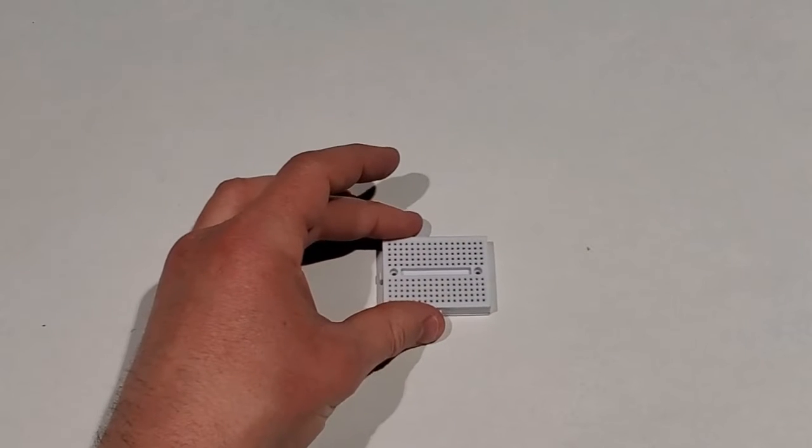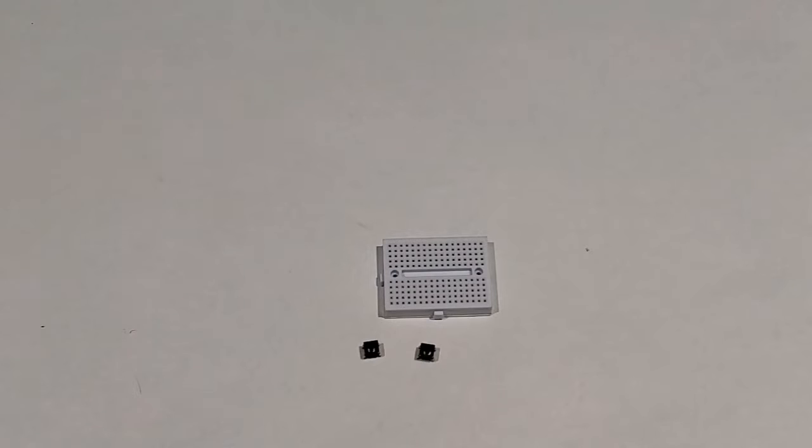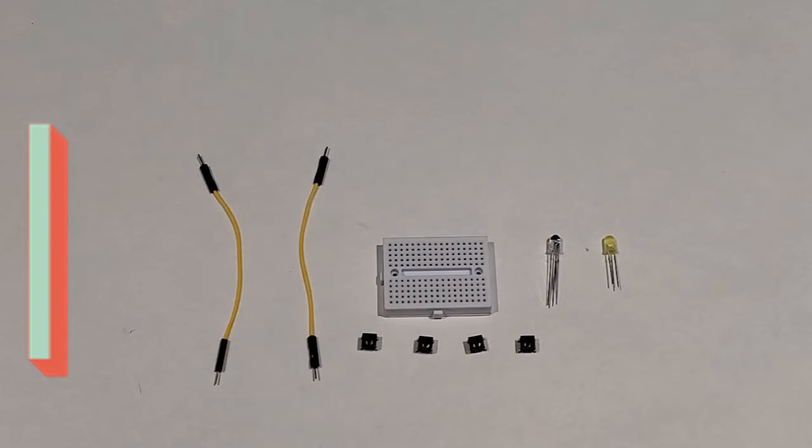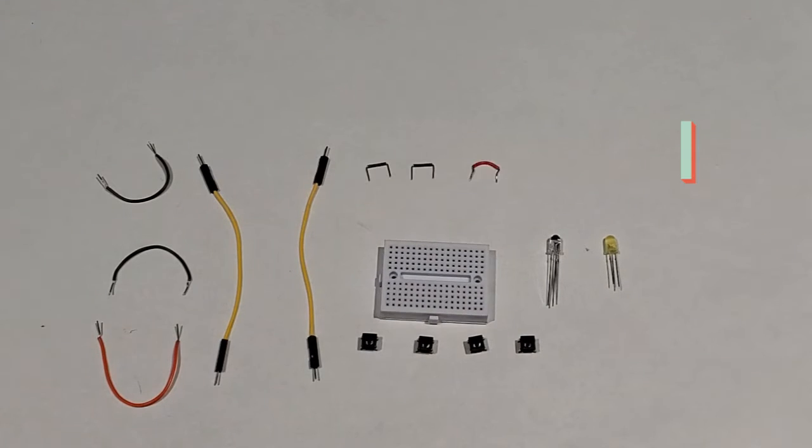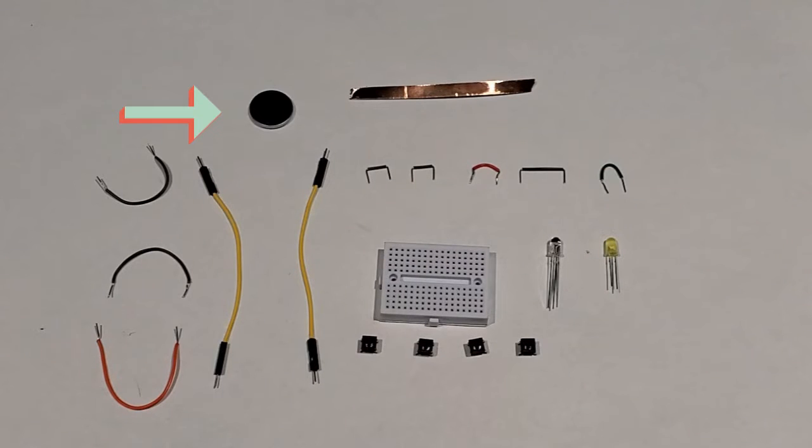In your kit you'll find a breadboard to hold your circuit together, four buttons, one three color LED light, a single color LED, two long wires, three other long wires and five short wires, a piece of copper tape, and an LED battery.